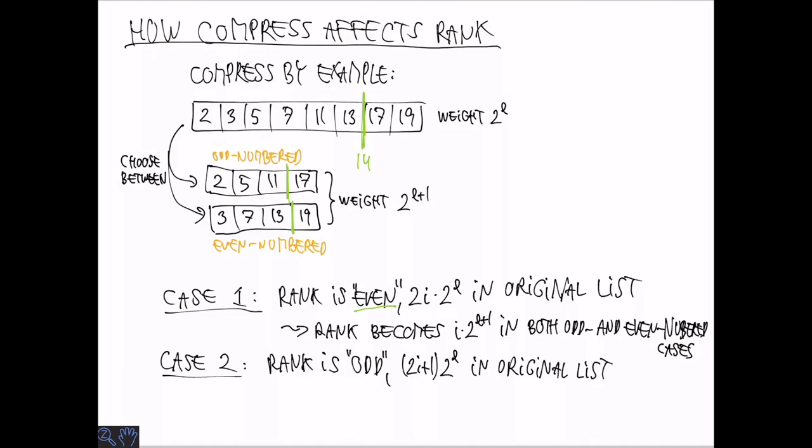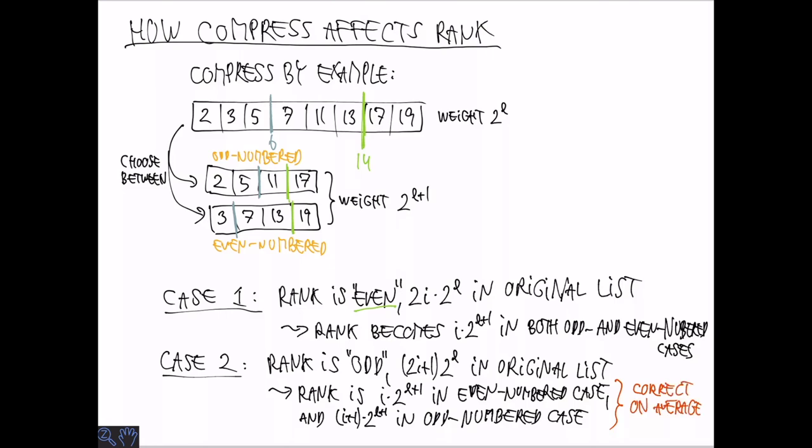On the other hand, if the rank is odd in the sense that we have an odd position in the list, and then of course multiplied by 2 to the L, then we get different ranks in the two cases. So if we choose the even-numbered things in the compression step, we are going to get a rank of i times 2 to the L plus 1, and if we choose the odd-numbered case, it's going to be i plus 1 times 2 to the L plus 1. So both of these are wrong. One is slightly too small, one is slightly too large, but on average they are actually correct. So now the idea is to choose this at random. Then we are going to get the correct thing in expectation.